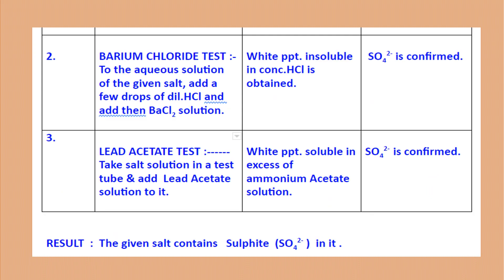Then we start with the chemical tests. Barium chloride test: take the aqueous solution of the salt, add a few drops of dilute HCl, and then add barium chloride solution. In this test, even if you do not add dilute HCl and straight away add barium chloride solution to the aqueous solution of the salt, you will get the test. A white precipitate is obtained if it is sulfate, and if you take a small quantity of the precipitate and add concentrated HCl to it, it will be insoluble, which confirms that it is sulfate.